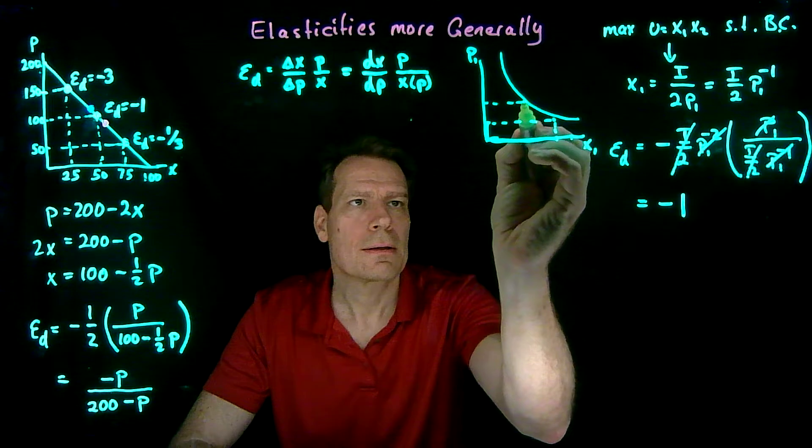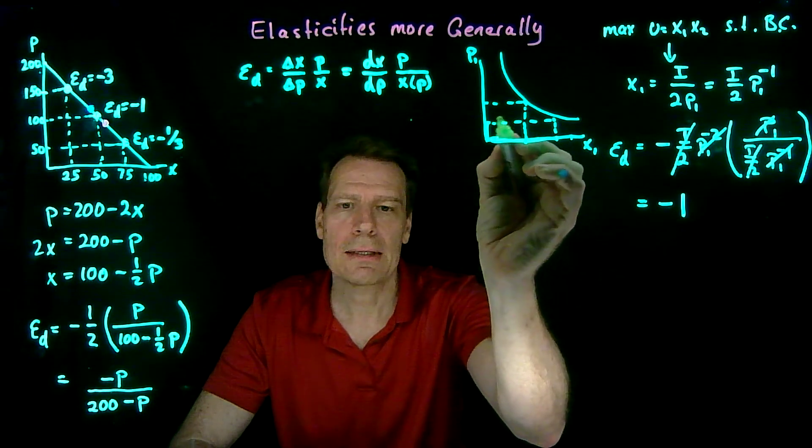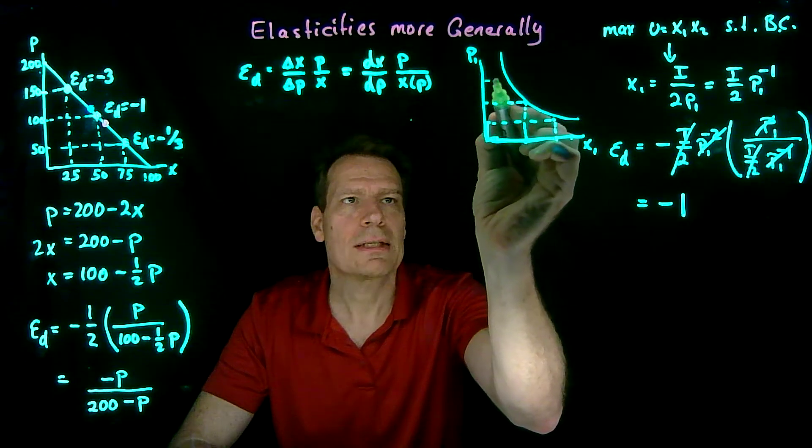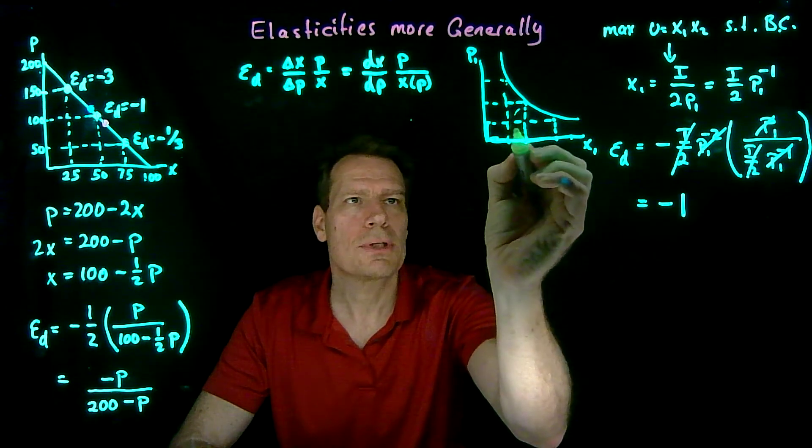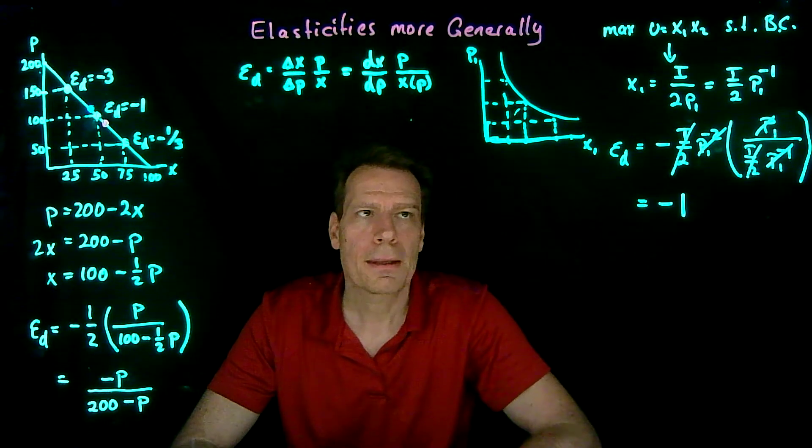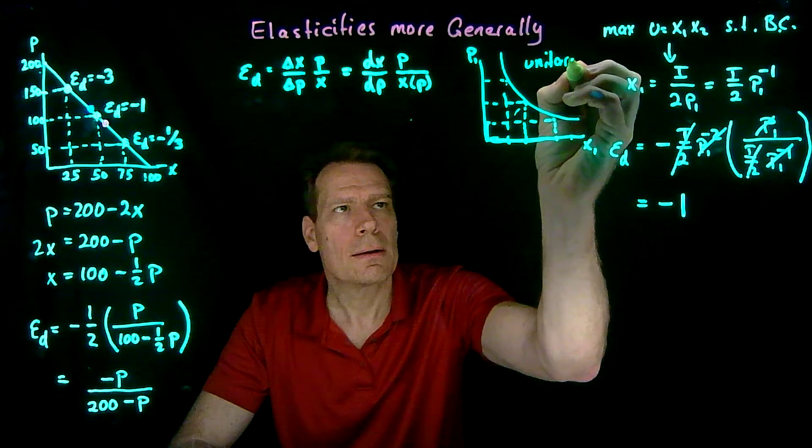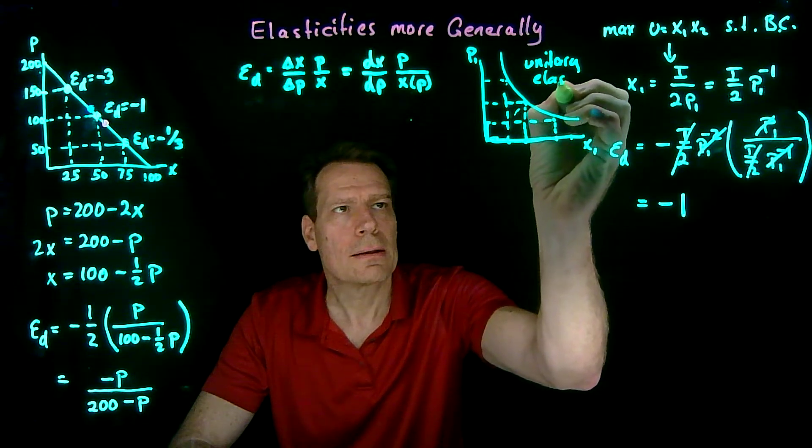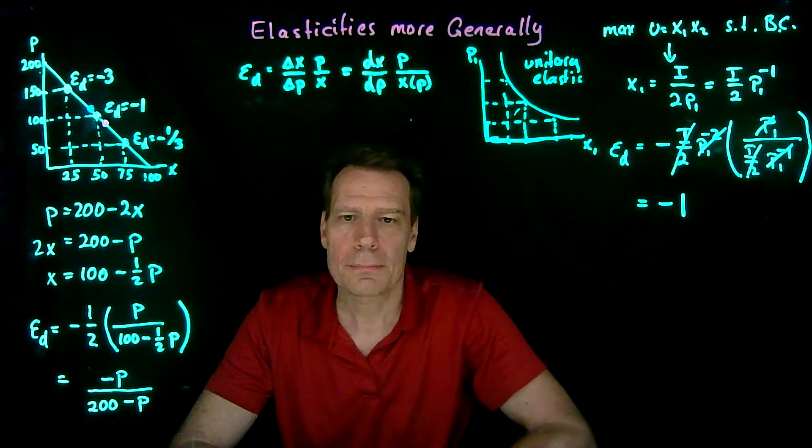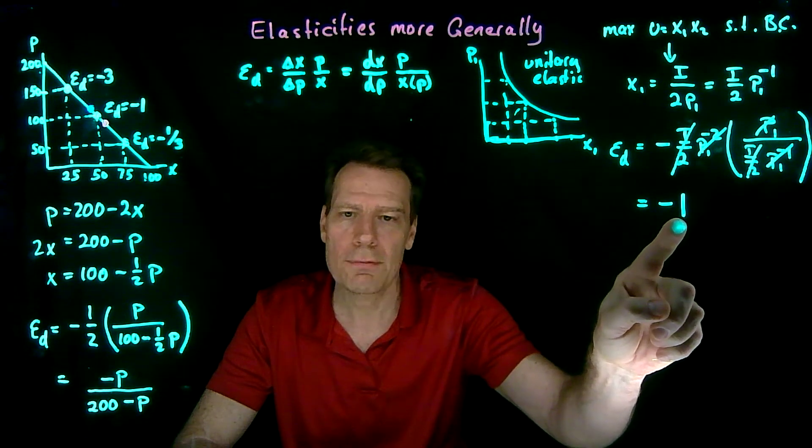If we raise the price, what we lose here must be roughly equal to what we gain here. When we raise it again, what we lose here must be roughly equal to what we gain here, and so forth. That's often called a unitary elastic demand curve. A demand curve with unitary elasticity. Elasticity of minus 1 everywhere.